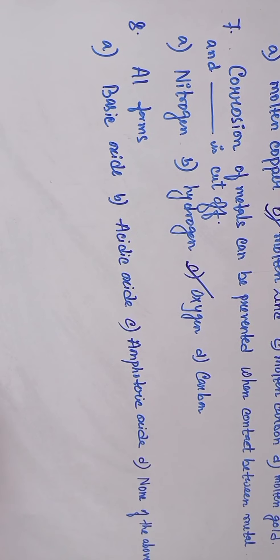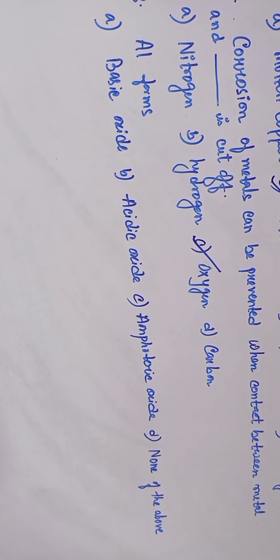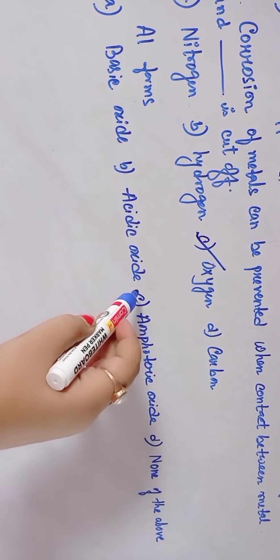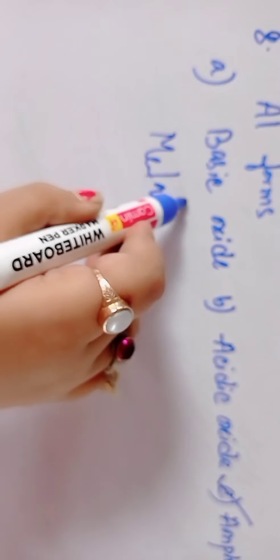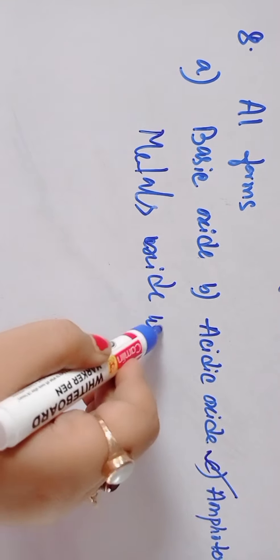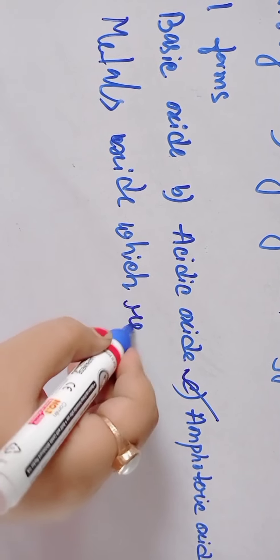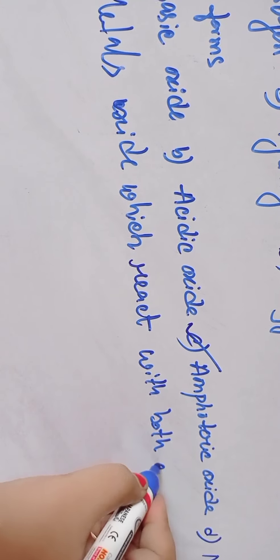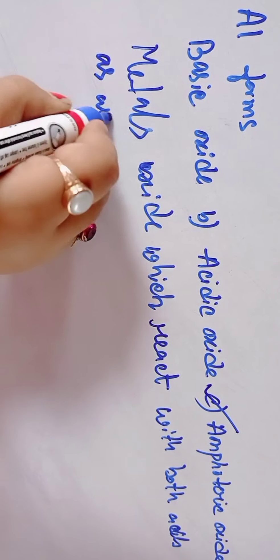Question Number 8: Al forms... Option A: basic oxide, Option B: acidic oxide, Option C: amphoteric oxide, Option D: none of the above. Option C is the answer: amphoteric oxide.